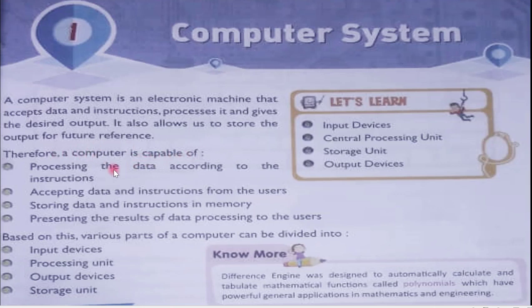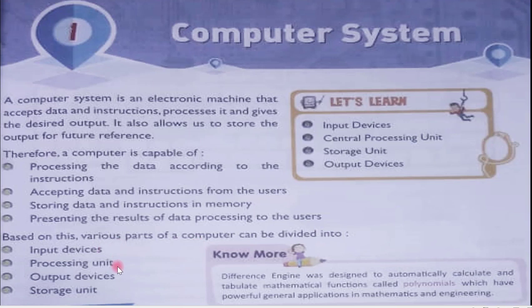A computer is capable of processing data according to the instructions given to it. It accepts data and instructions from the user, stores data and instructions in memory, and presents the results of data processing to the user. Based on this, the various parts of a computer can be divided into input devices, processing unit, output devices, and storage unit.